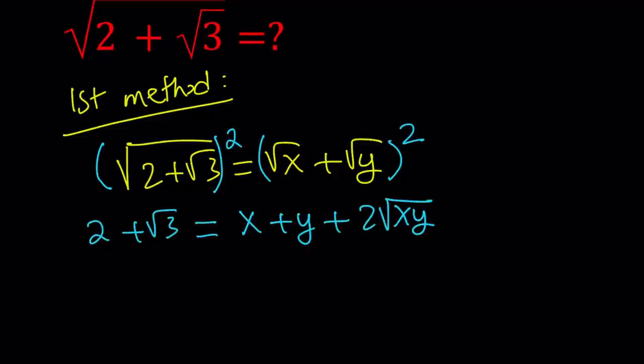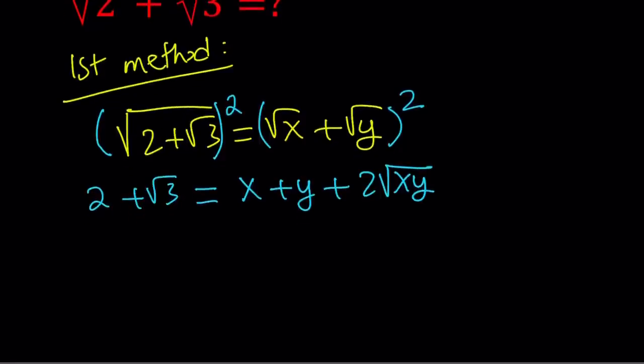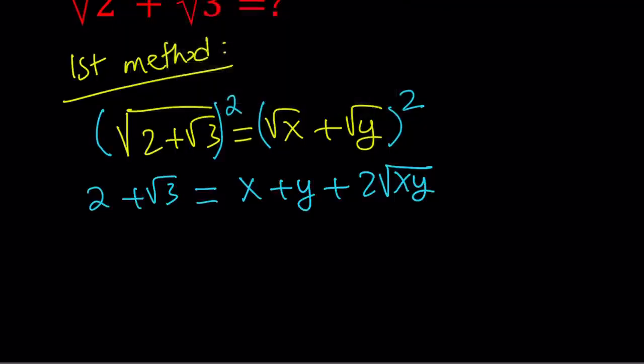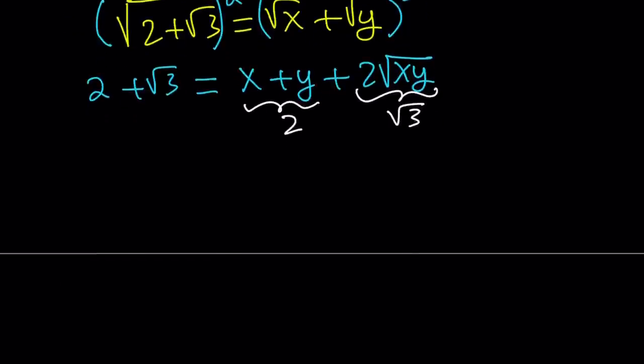So we kind of sort of expanded it. Now, from here, since x and y are rational numbers, we can go ahead and compare them in the following manner. x plus y needs to be a 2. And 2 times the square root of xy needs to be square root of 3. That gives us a system.